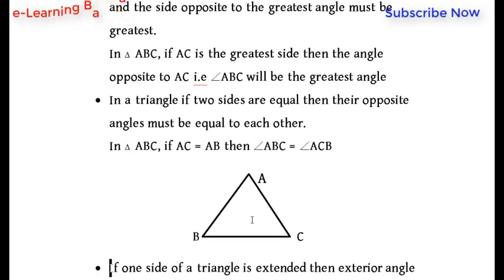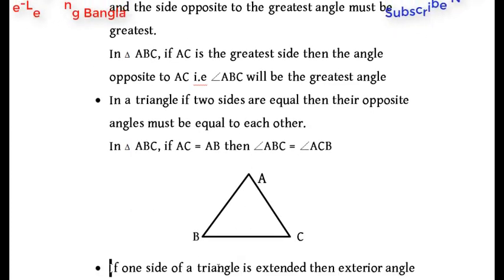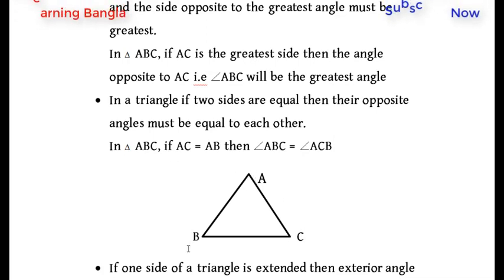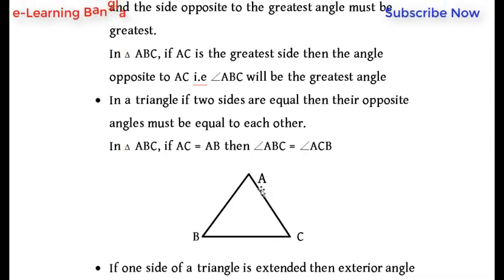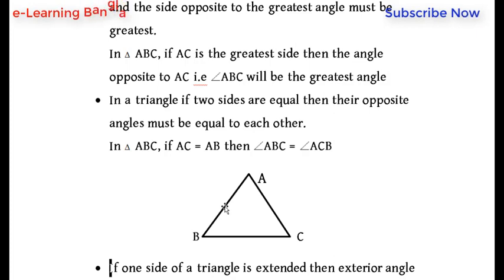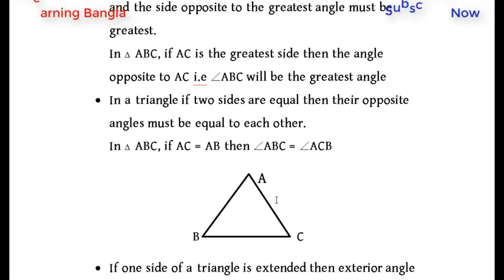In triangle ABC, if AC is the greatest side, then the angle opposite to AC — that is, angle ABC — will be the greatest angle. If two sides are equal, then their opposite angles must also be equal to each other.